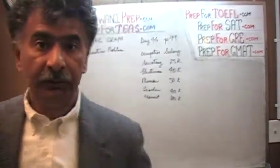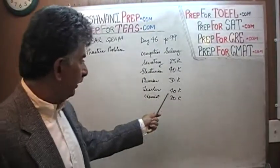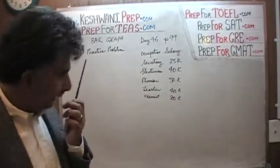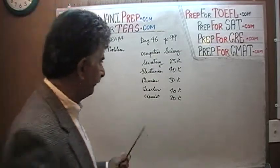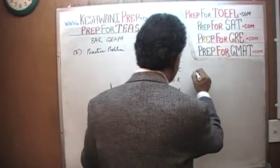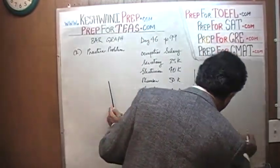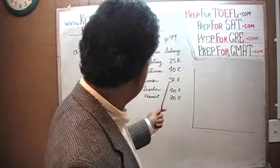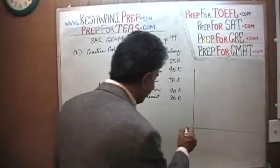There are your priorities in society — the plumber makes $10,000 more than the teacher does. Anyway, let's do our bar graph. It goes all the way up to $80,000, so that's what we are going to do here.